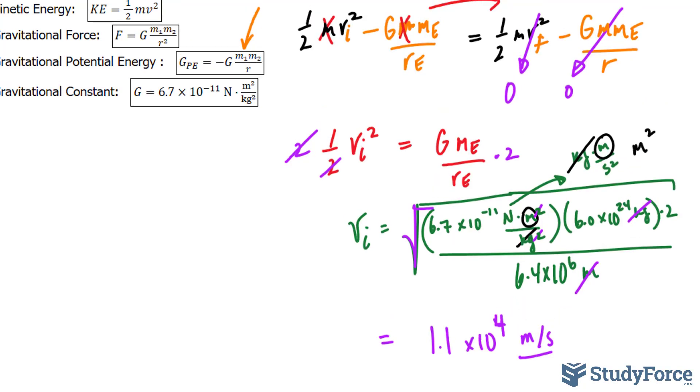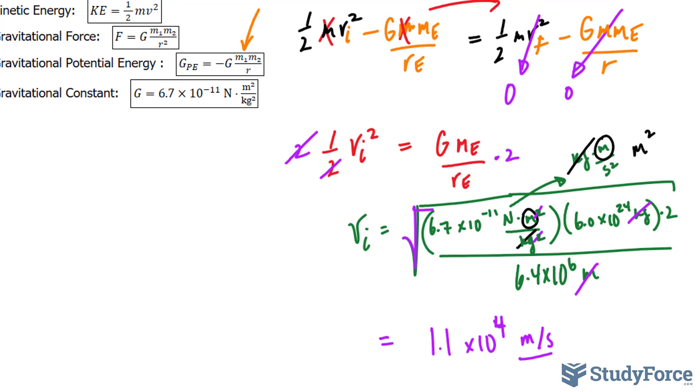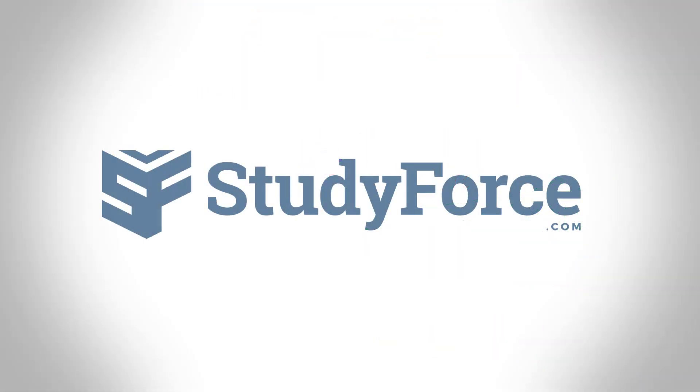And so there you have it. This is the velocity that a rocket or an object needs to be moving directly up perpendicular to the Earth in order for it to eventually escape the gravitational pull of Earth.